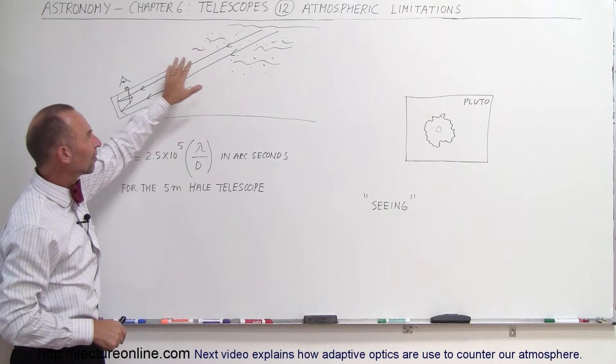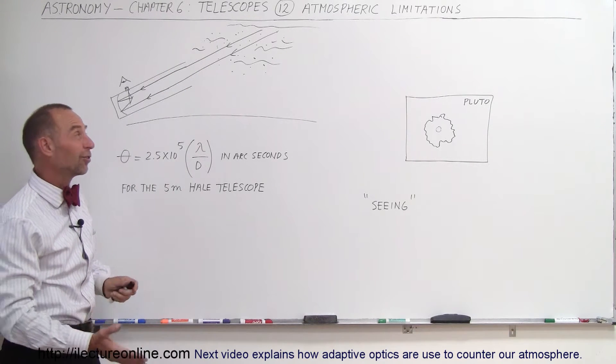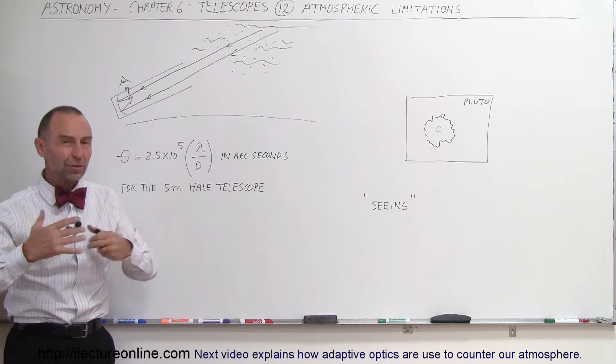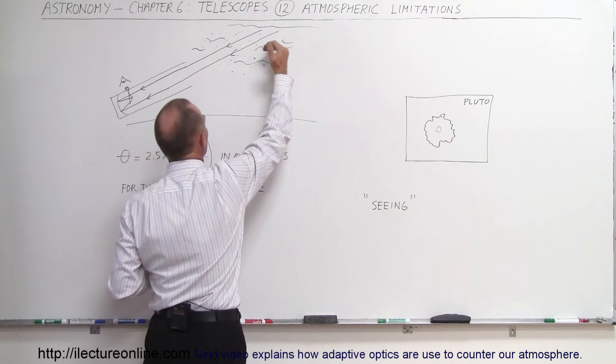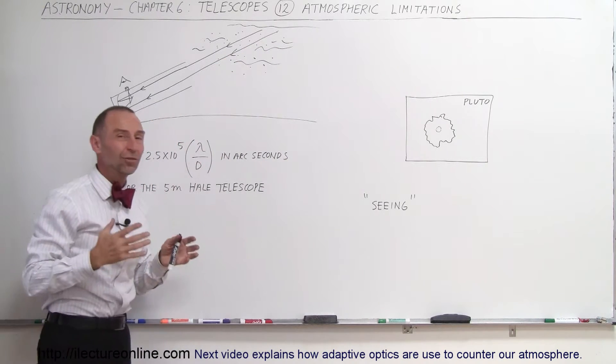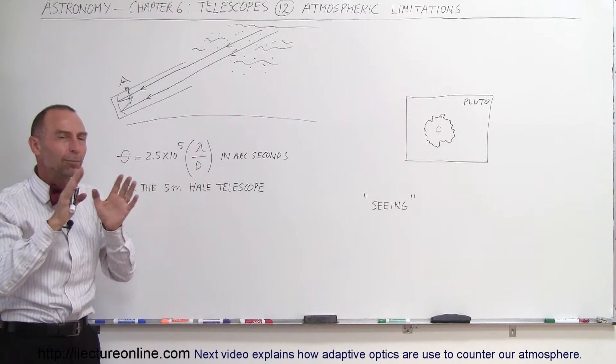And in that 65 miles of atmosphere, there's a lot of turbulence, there's a lot of dust particles that are floating around. And all that commotion of the atmosphere causes the light that has to travel through it to be bounced around, and so the images that we see are very blurred.